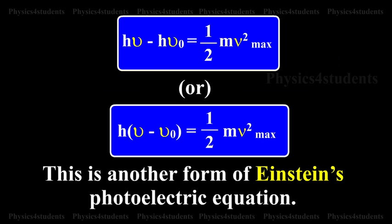H nu minus H nu0 is equal to half Mv square maximum, or H into nu minus nu0 is equal to half Mv square maximum. This is another form of Einstein's photoelectric equation.